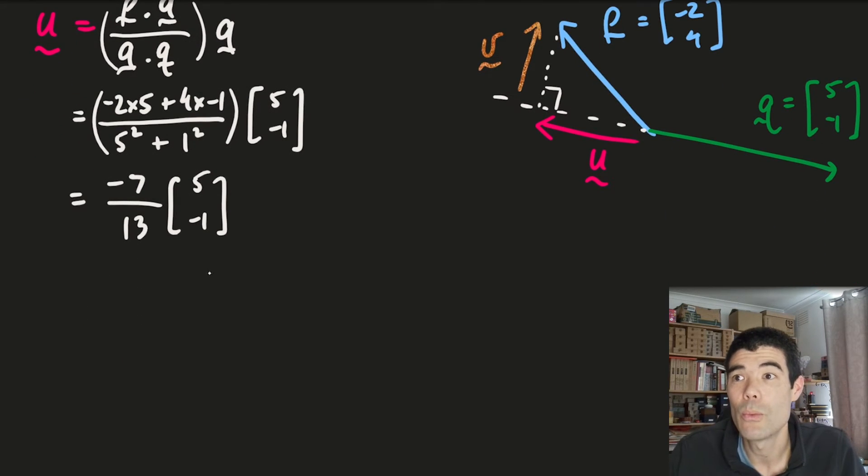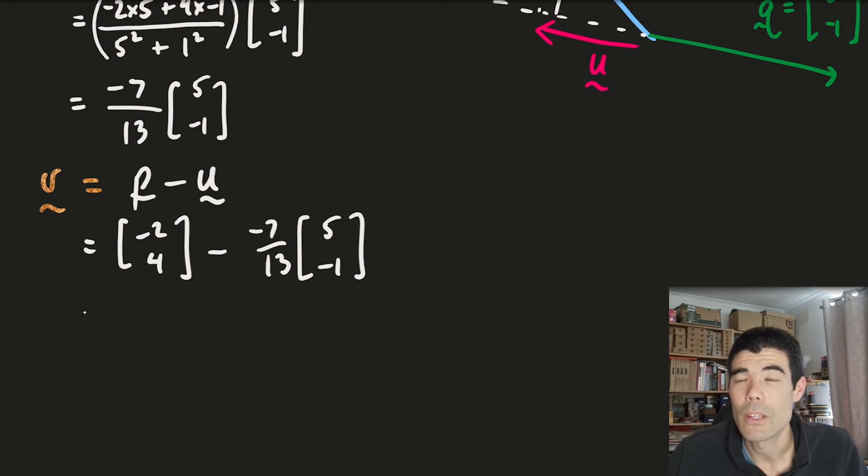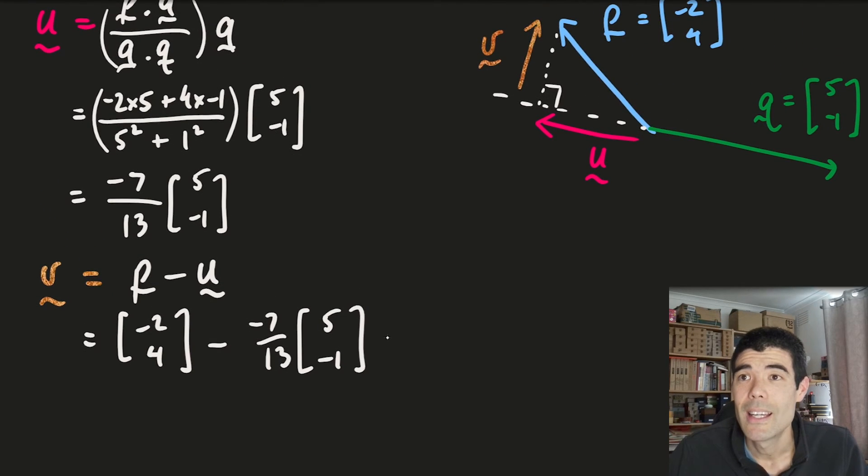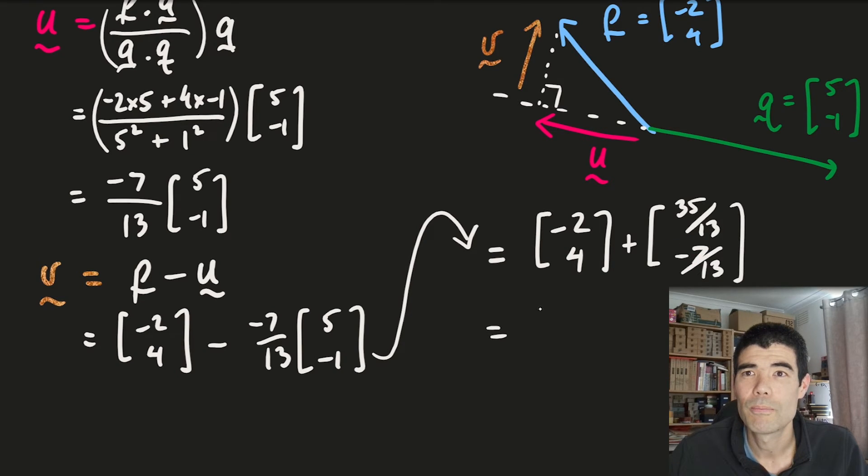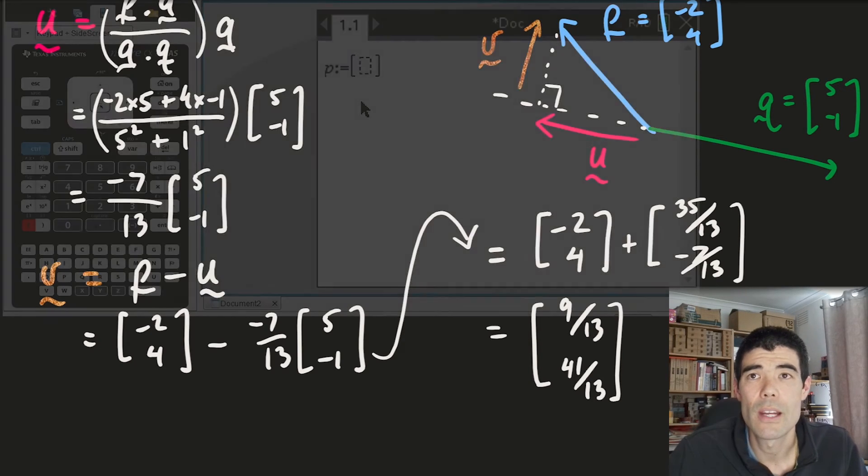Now, for the perpendicular component, we can use subtraction there. If we want to get vector v, we can use vector subtraction. Either we go backwards u and then forwards p, or we write it as p minus u. In order to do that subtraction, we're minusing negative seven thirteenths. We would have to expand out the brackets, use a common denominator of thirteenths. This is going to be a little bit tedious, but hopefully we'll get our answer there. If we look at the diagram and check, we're going nine thirteenths in the positive x direction, 41 thirteenths in the positive y direction, looks roughly correct.